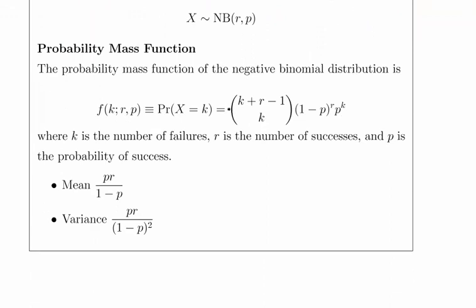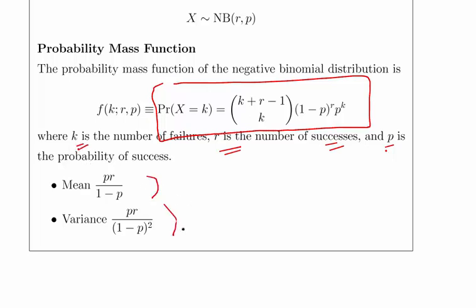That's the probability mass function there. R is the number of successes, P is the probability of success, K is the number of failures, and this is the mean and the variance respectively.